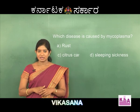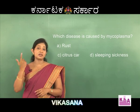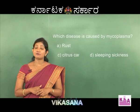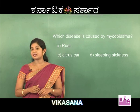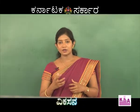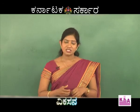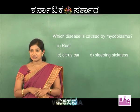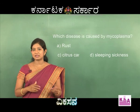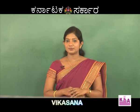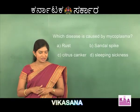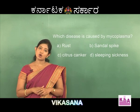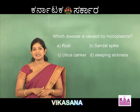The last option is sleeping sickness. Sleeping sickness is a disease observed in different types of animals including human beings. It is caused by a flagellated protozoan. The infected person will have a lot of fatigue, severe headache, and uncontrollable sleep during daytime — which has given it the name sleeping sickness. It is caused by an organism called Trypanosoma. So: option A rust is caused by a fungus, B sandal spike is caused by mycoplasma, C citrus canker is caused by a bacteria, and sleeping sickness is caused by a flagellated protozoan. The right answer is B, sandal spike.